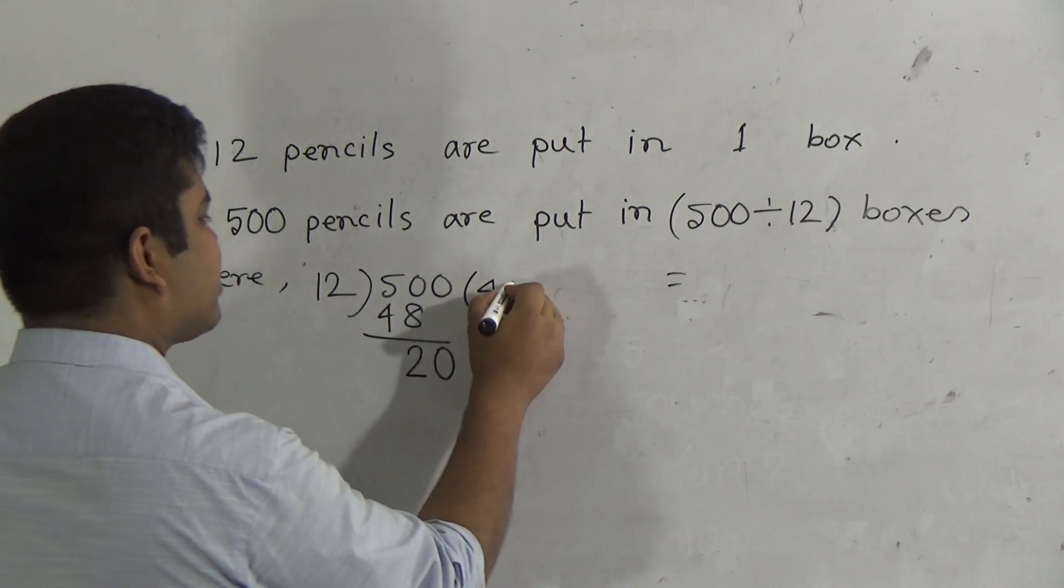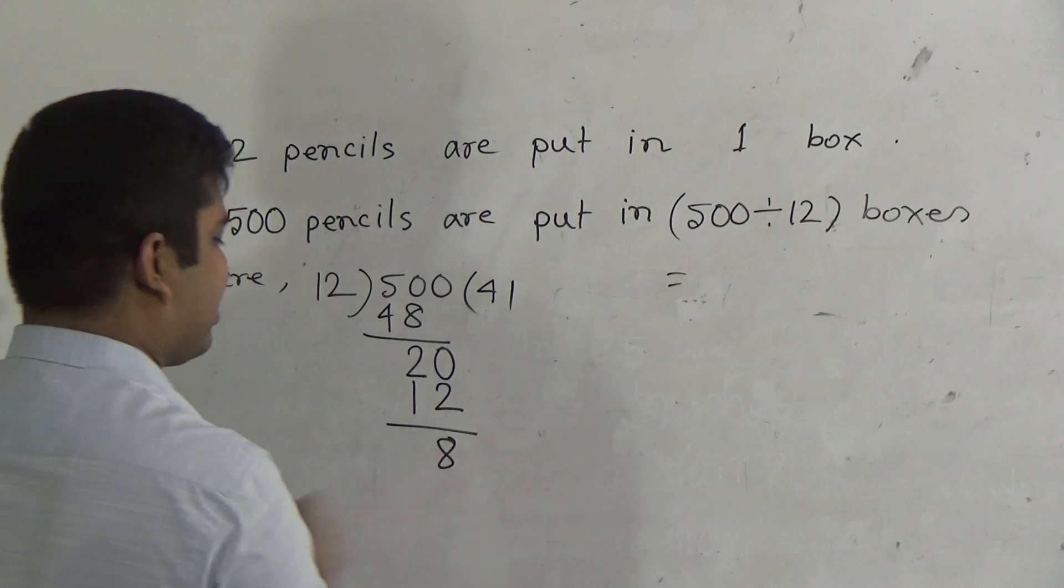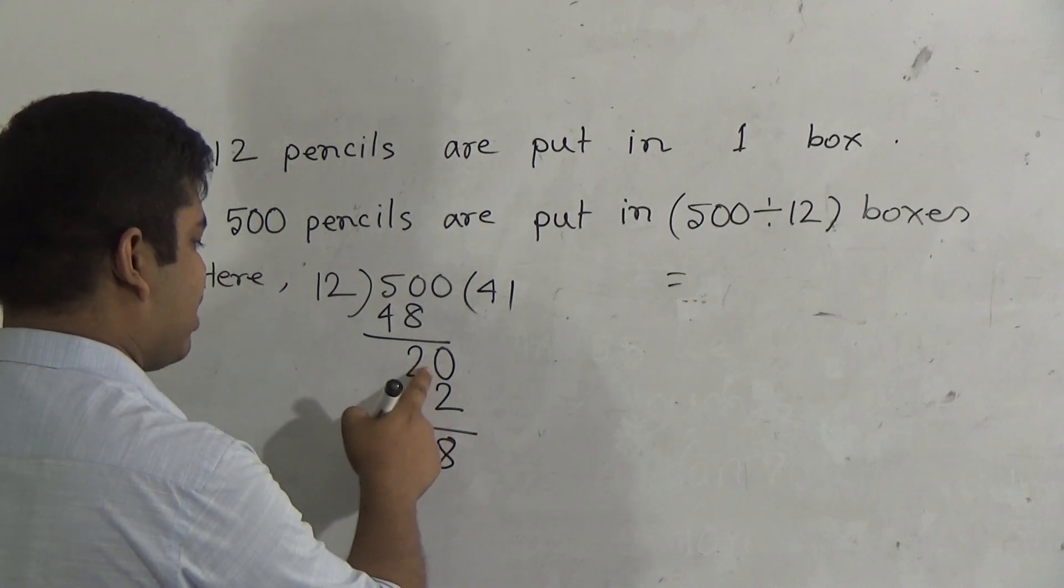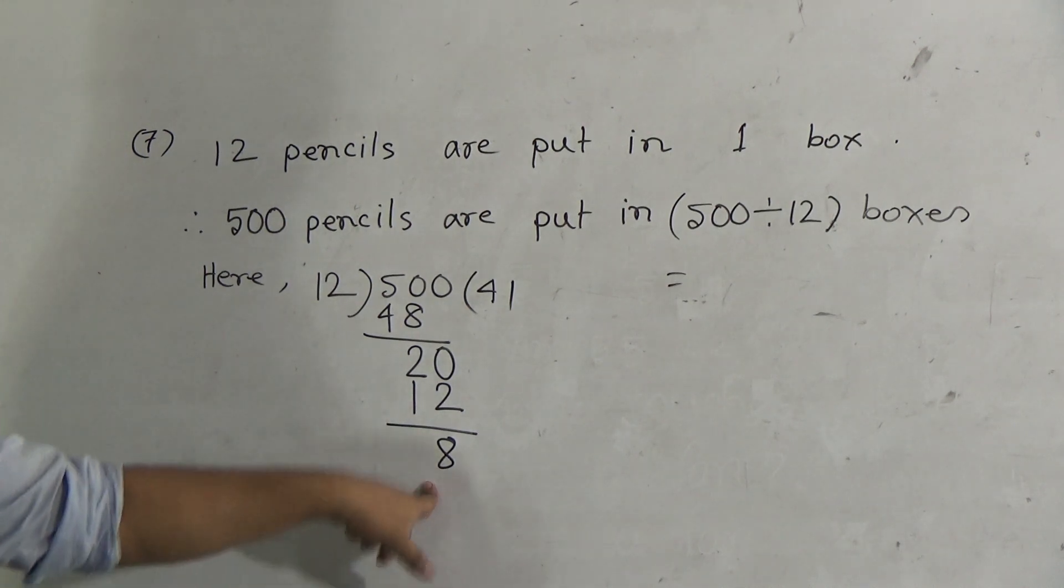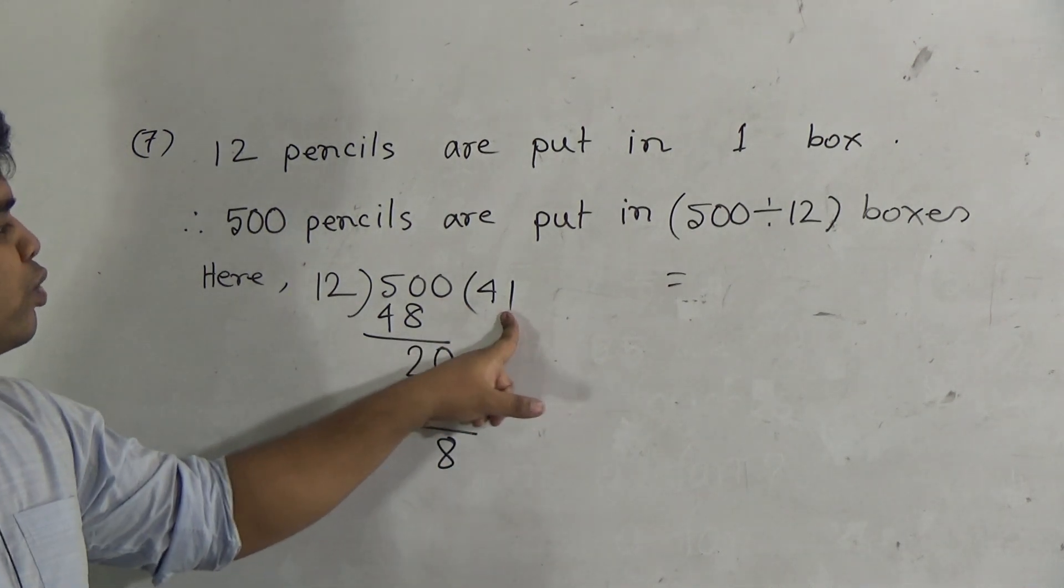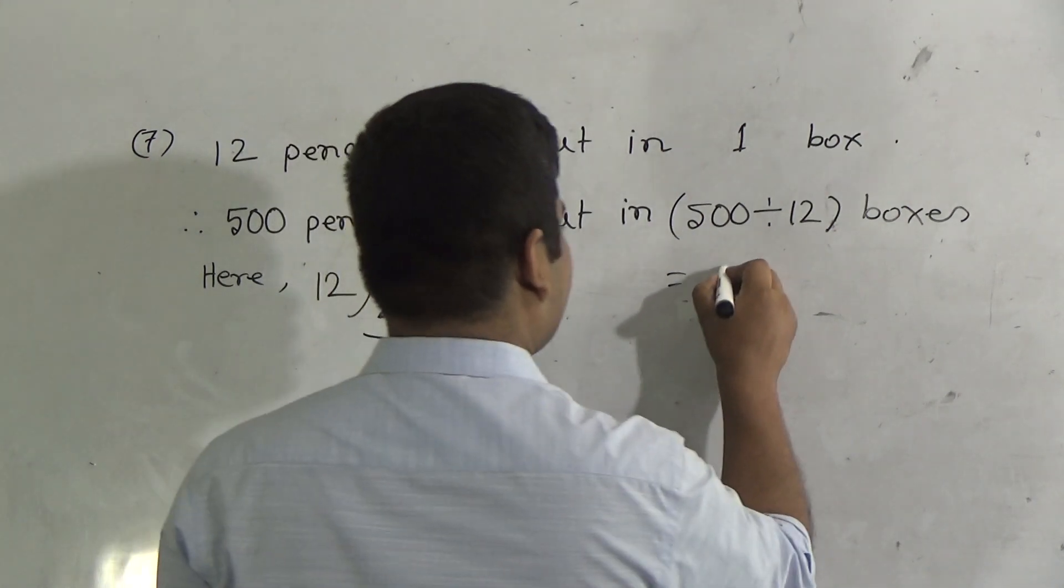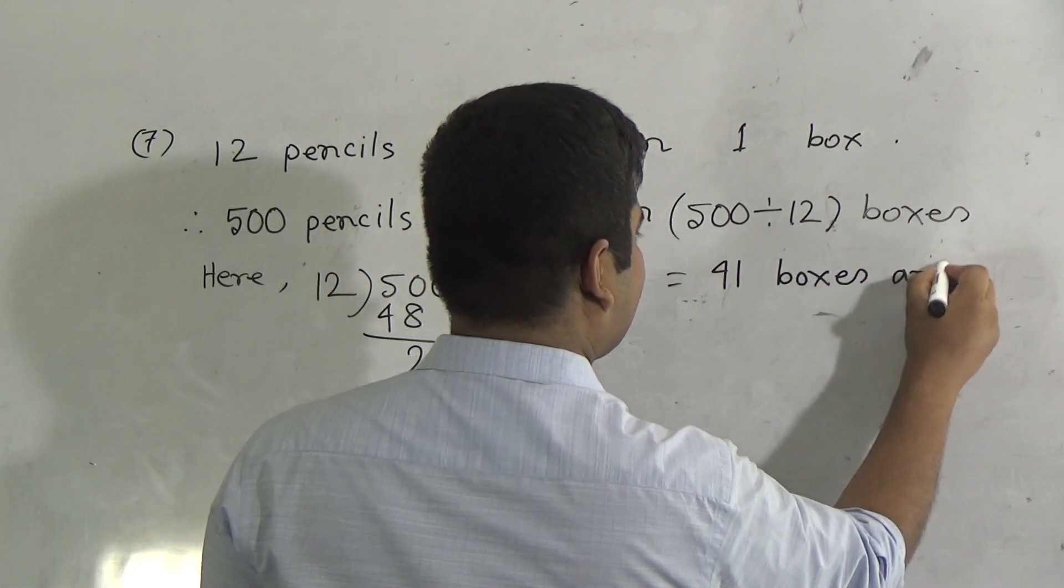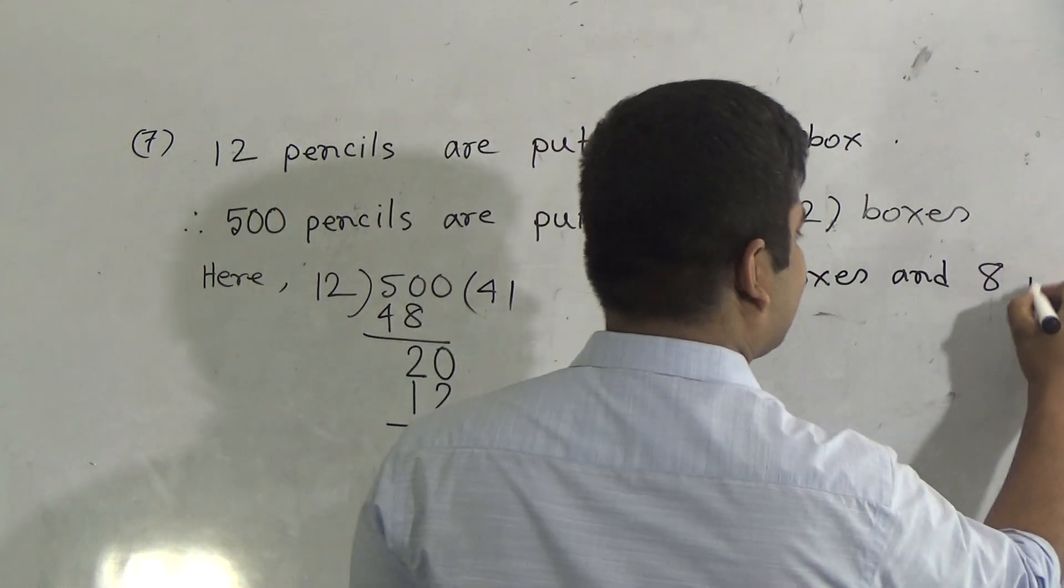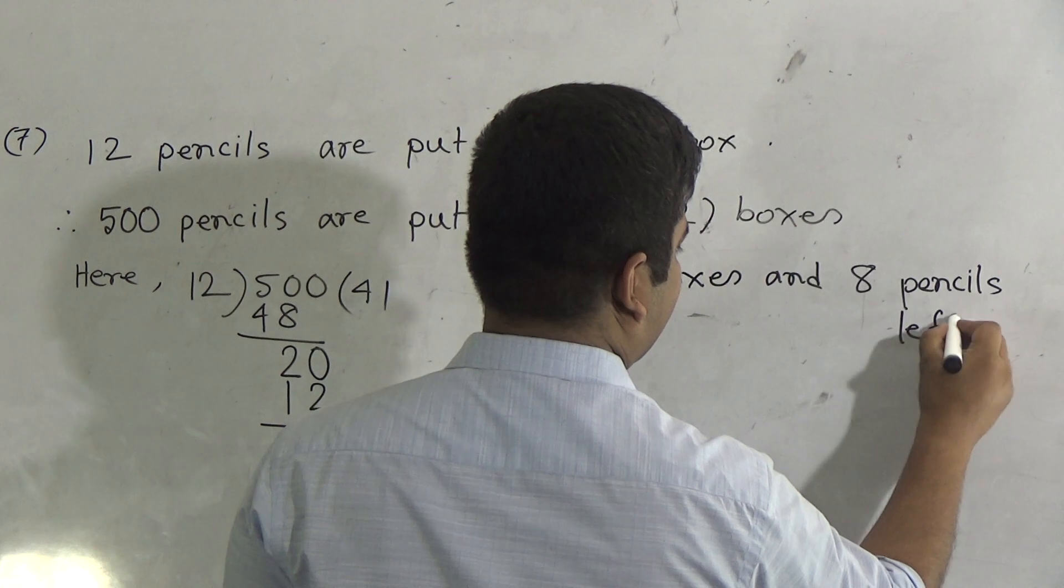In 20, 12 goes in 1 times. 12 ones are 12. If we subtract, then we get 8. And this 1 is added with this 1. It will be 2, 220. So how many box? 41 boxes is needed and 8 pencils remain. So here write 41 boxes and 8 pencils left.